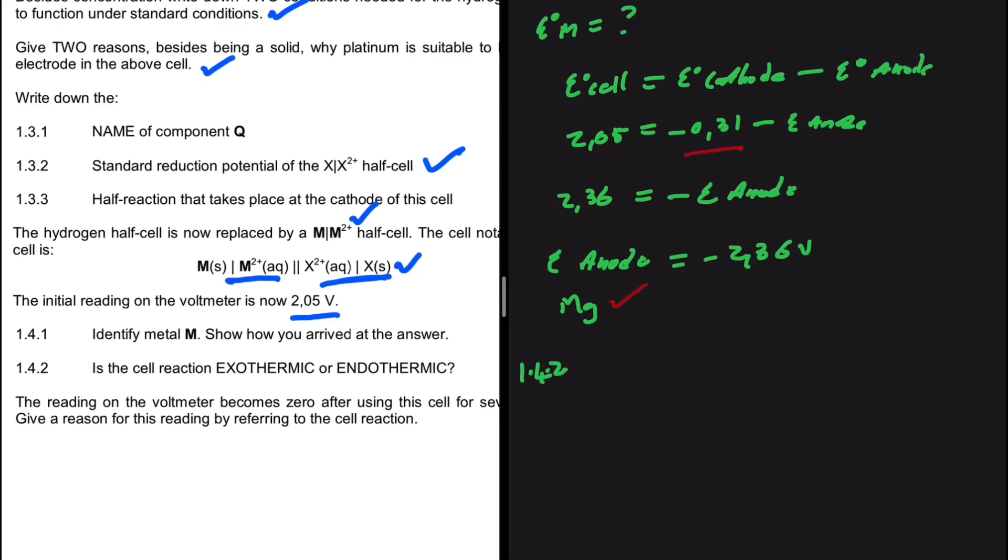1.4.2. Is the cell reaction exothermic or endothermic? In a galvanic cell, the reaction will always be exothermic.